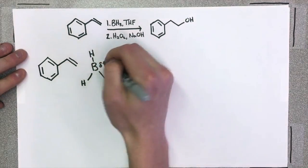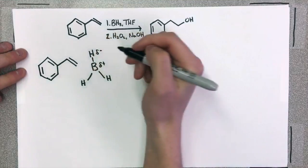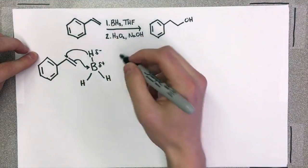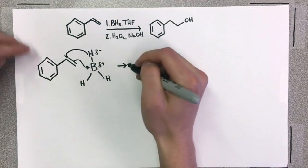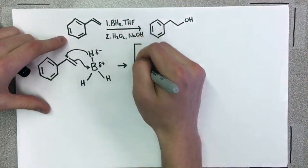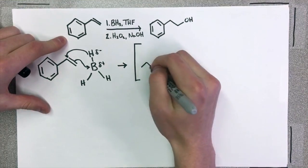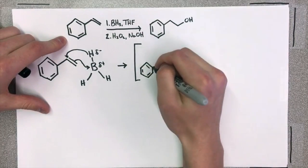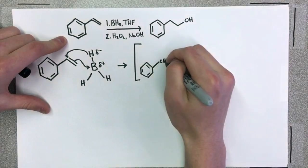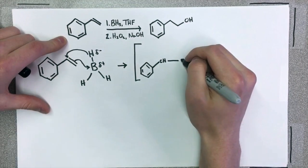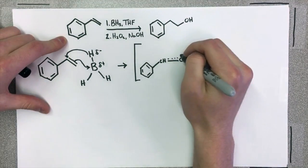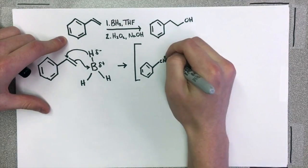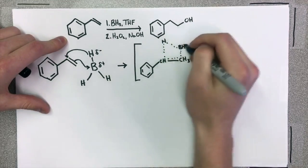So, here we have the pi bond and the alkene attacking the boron at the same time the hydrogen is going to attack the carbon. And this is going to set up a transition state that's interesting, a little bit strange, but also helps us account for the way that this reaction works. So, you're going to have some partial bonds set up, and those are indicated by the dotted lines here. Those partial bonds are going to be between the boron, the hydrogen, and both carbons.